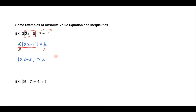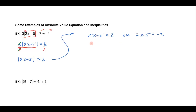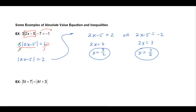Now that I have the absolute value isolated, I can break it into its two parts. The two parts are 2x minus 5 equals 2 — just drop the absolute value — or turn the equation around, so it's still an equal sign and then put negative 2. Solving those two pieces gives the solution: I get 2x equals 7, so x equals 7 halves; and over here 2x equals 3, so x equals 3 halves.